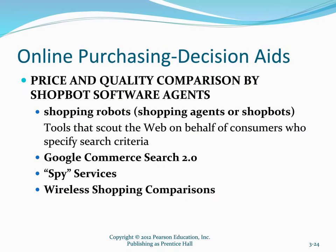There are also spy services — basically robots working for you without you being tethered to your computer. For example, they can monitor stock prices and send you an email when a price hits a certain level. On eBay, spy services allow you to be notified when a bid exceeding yours comes in, so you can log back in and raise your bid. There's also wireless shopping comparison — really just referring to smartphones giving us access to the internet virtually everywhere, allowing us to do comparison shopping at any time. We can log in while standing in front of a product in a store and check competitor prices online to decide if it's a good buy.